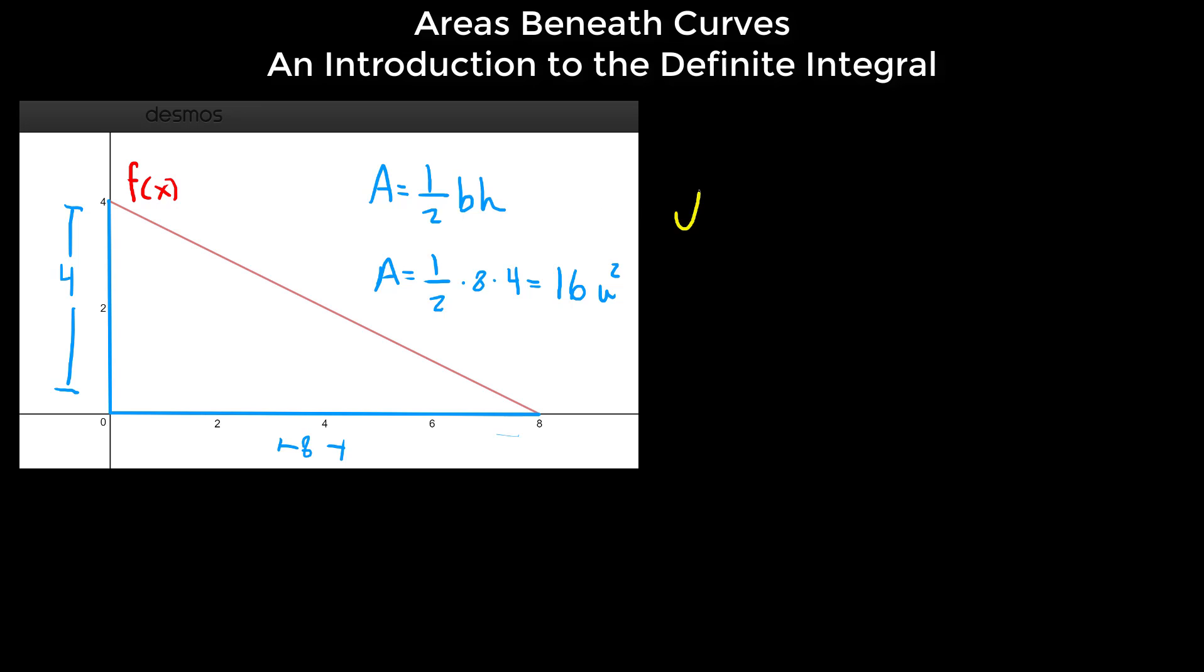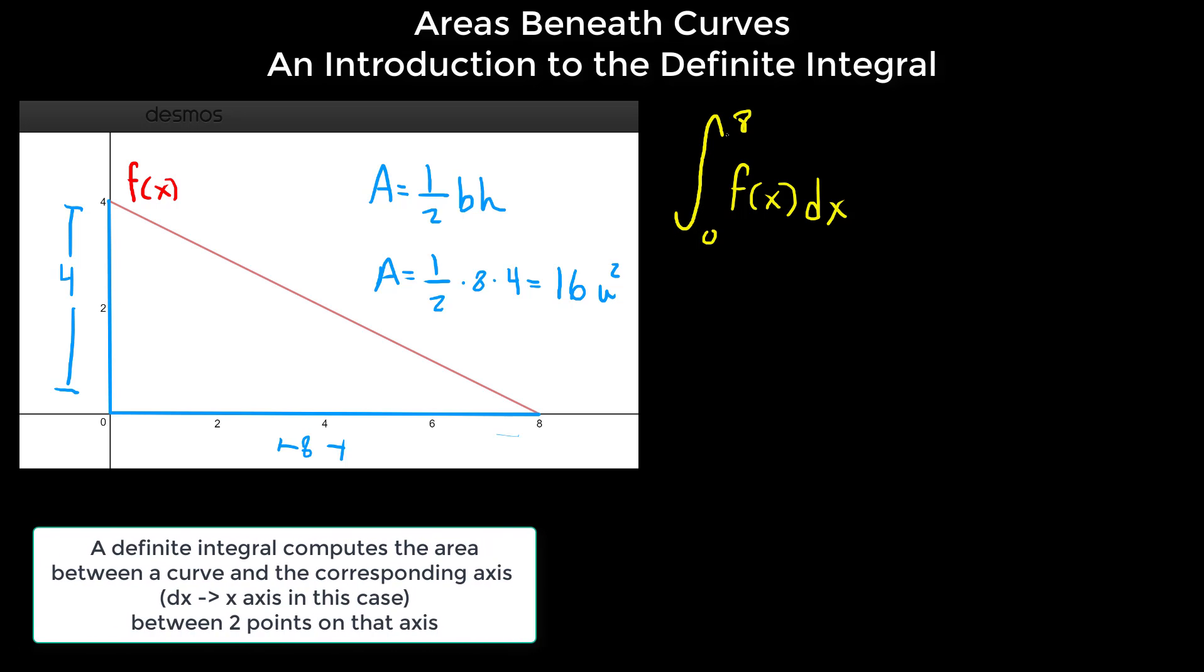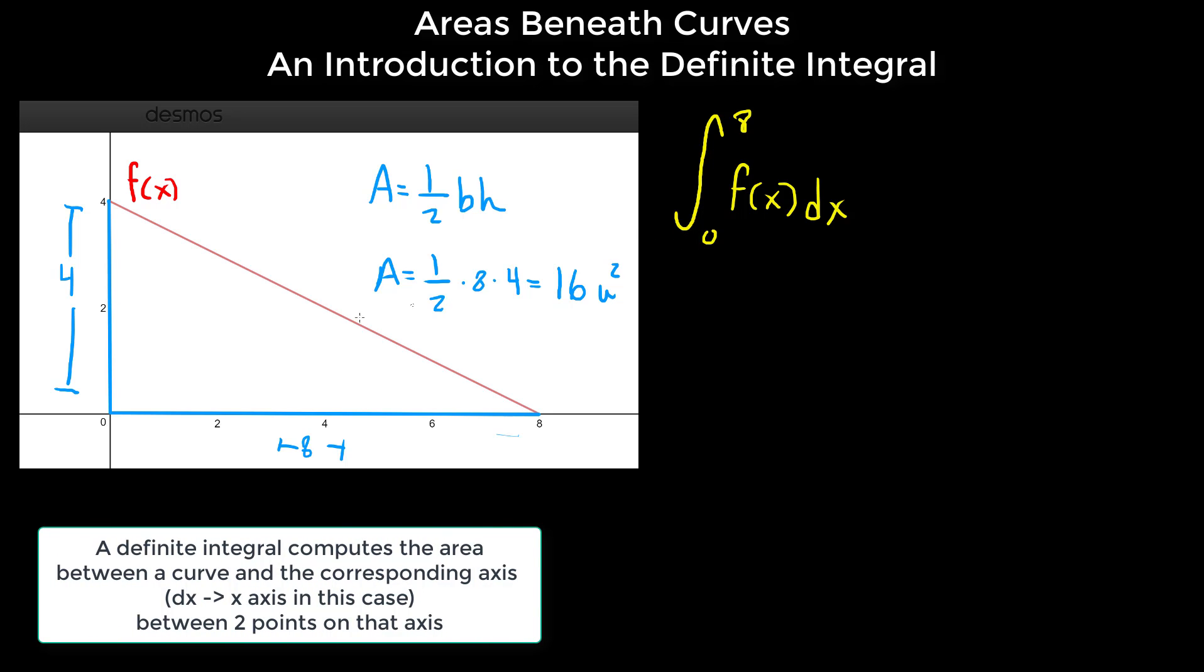What we've done is we've computed a definite integral from zero to eight of this function, f of x. And I'm going to tack along this dx right here. But essentially what this means, this definite integral. So this is what the symbol means right here. This definite integral from zero to eight is essentially computing the area beneath the curve from zero to eight. That's what this means. The area from blank to blank, from zero to eight. f of x, well, that's our function. That's what we're taking the area beneath.